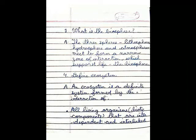Question 4: Define ecosystem. An ecosystem is a definite system for the interaction of all living organisms, biotic components that are interdependent and interlinked with each other,